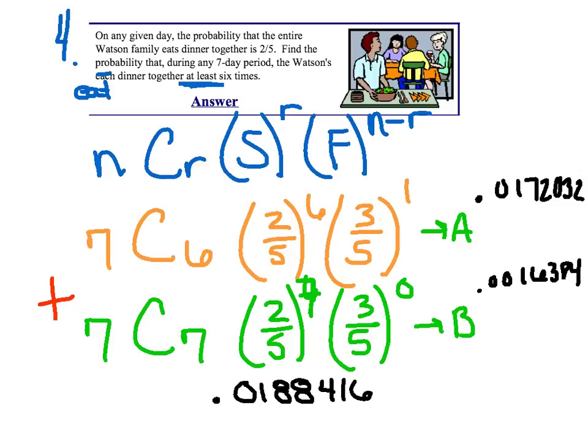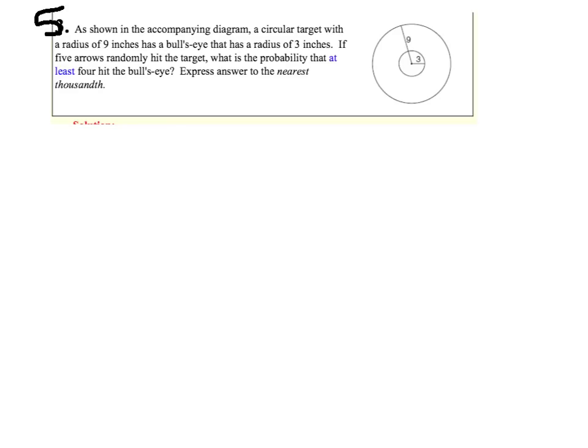We've made it to our last question for the evening. As shown in the accompanying diagram, a circular target with a radius of nine inches has a bullseye with a radius of three inches. If five arrows randomly hit the target, what is the probability at least four will hit the bullseye?